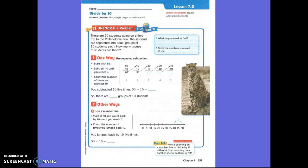There are 50 students going on a field trip to Philadelphia Zoo. The students are separated into an equal group of ten. How many groups are there? What are we trying to find, everybody? How many groups are there? Write that down. Make sure you have your name on your paper as well.